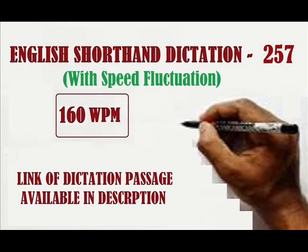This is English shorthand dictation number 257 and the dictation speed is 160 words per minute. There are several parliamentary devices for raising matters of public importance. Calling attention is one of these devices. Under this procedural device, a member has to take permission of the speaker to call the attention of a minister to any matter of urgent public importance, and the minister may make a brief statement thereon.